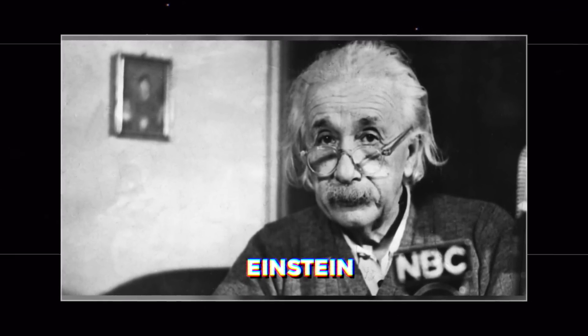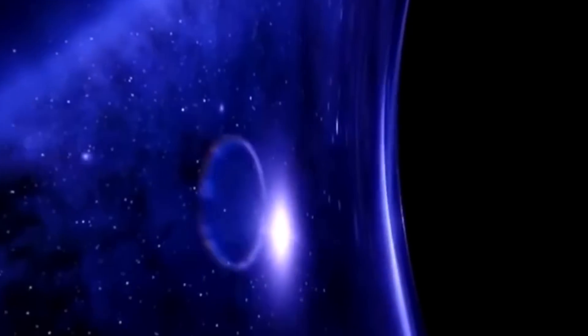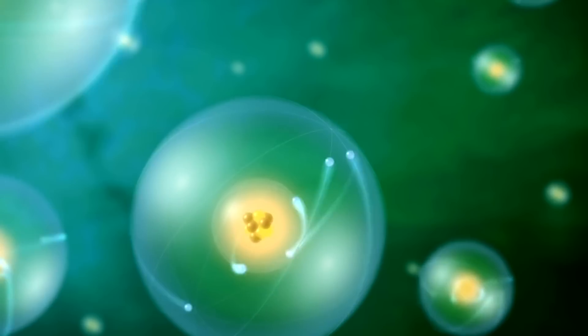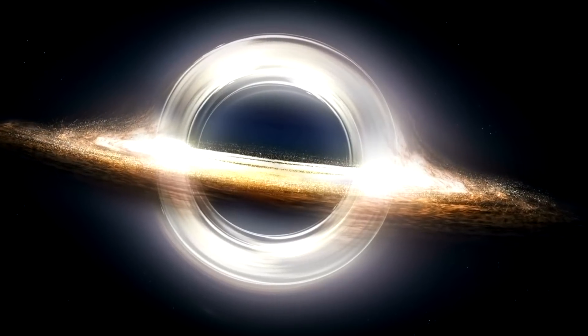Not long after Einstein introduced the world to general relativity in the early 1900s, there emerged the foundation for black holes and their mathematical opposites, white holes. Einstein himself didn't predict them; he thought the extreme nature of black holes was far too outlandish to investigate.